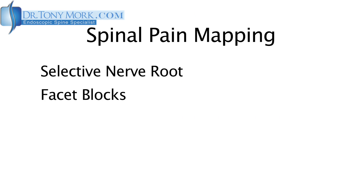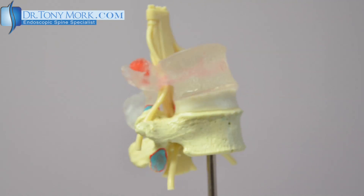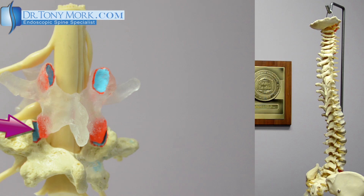The second type of spinal pain mapping block is one of facet blocks. Facets are the guiding joints in the back of the spine and these cause back or neck pain a little off the midline. What you can see here is if we put a little Novocaine where the purple arrow is into the facet joint, this could actually temporarily remove the pain. If that was successful, then we could implicate the facet joint as causing that particular type of pain.